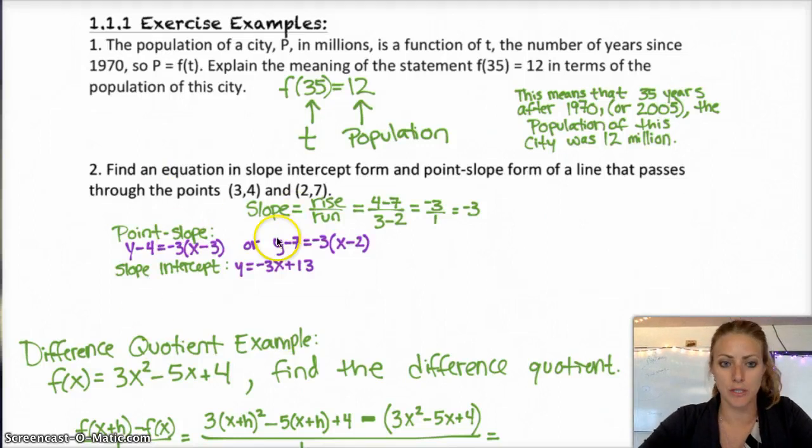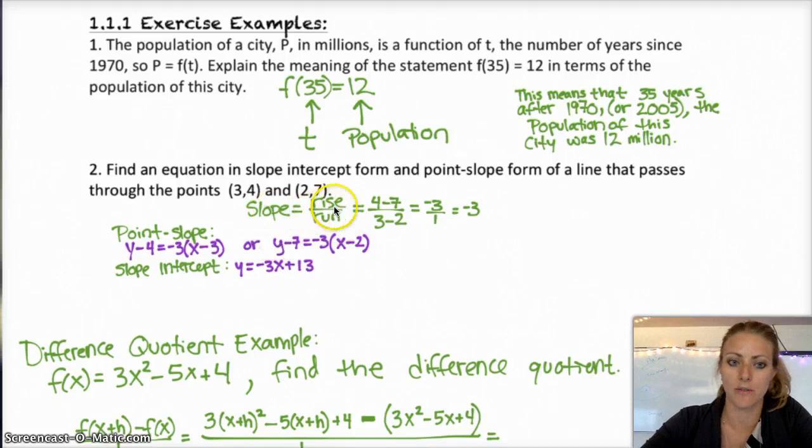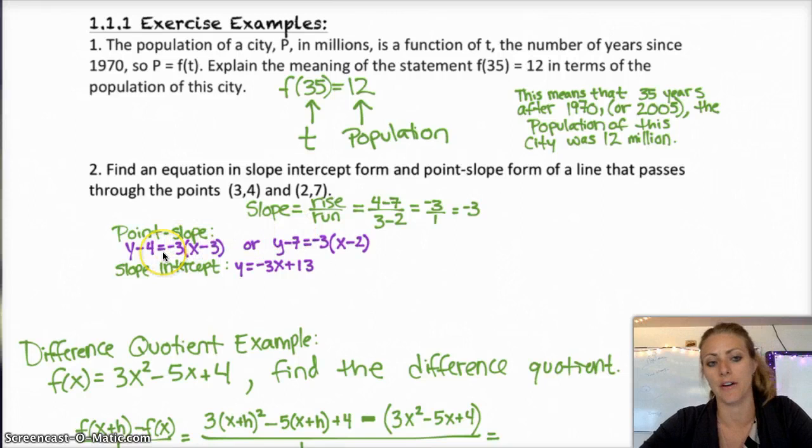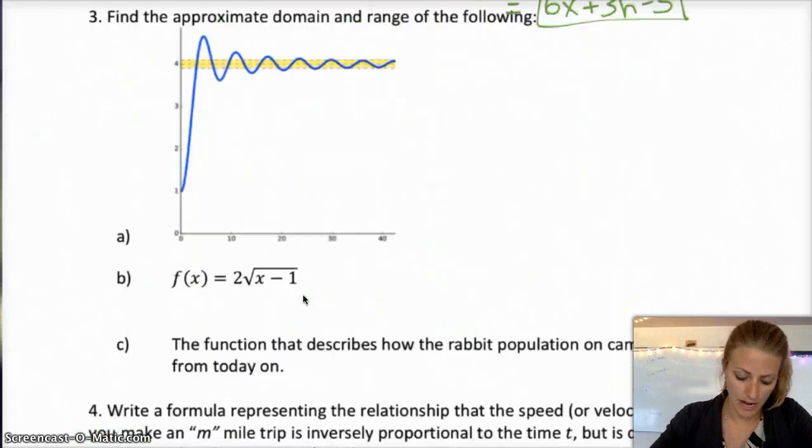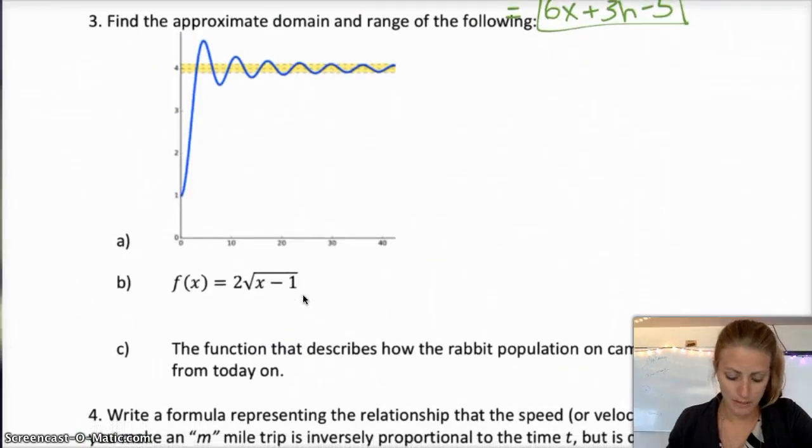And then the second one, I started with point slope form, but I had to find slope first, which is rise over run. 4 minus 7 over 3 minus 2, or 7 minus 4 over 2 minus 3. Keep those in order. But you end up with negative 3 either way. So point slope form, either of those would be correct. And then you could just multiply those out and rearrange it to get slope intercept form, which is y equals negative 3x plus 13.